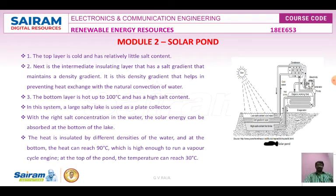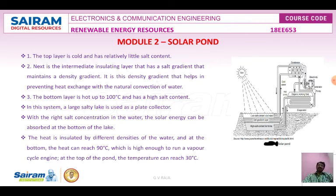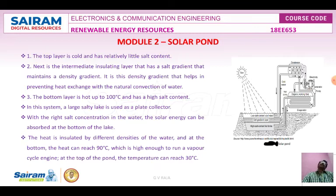A solar pond differs from a normal pond. In a solar pond, the upper water surface has a lower temperature compared to the bottom. More salt is added to the water, creating three distinct layers: the upper layer has the least salt concentration, the middle layer has a medium salt concentration, and the bottom layer has the highest salt concentration.